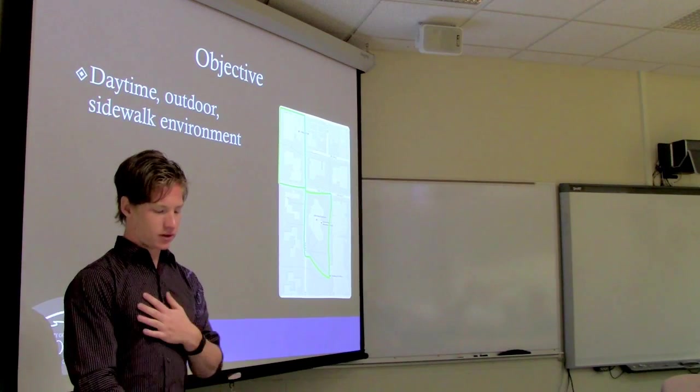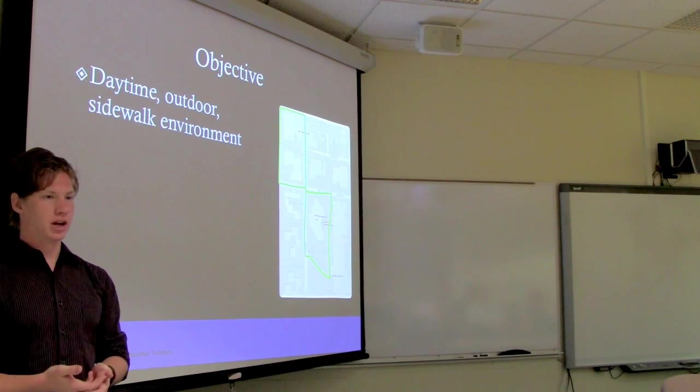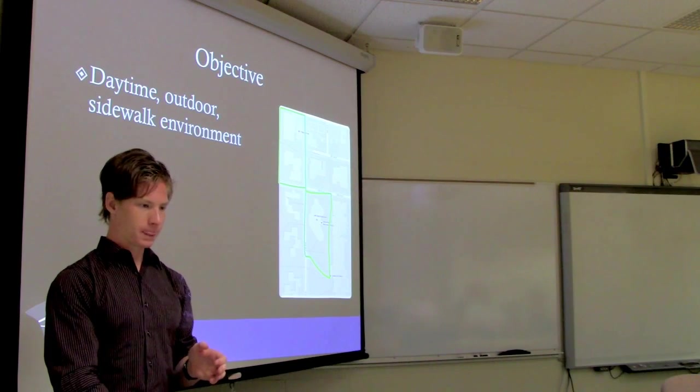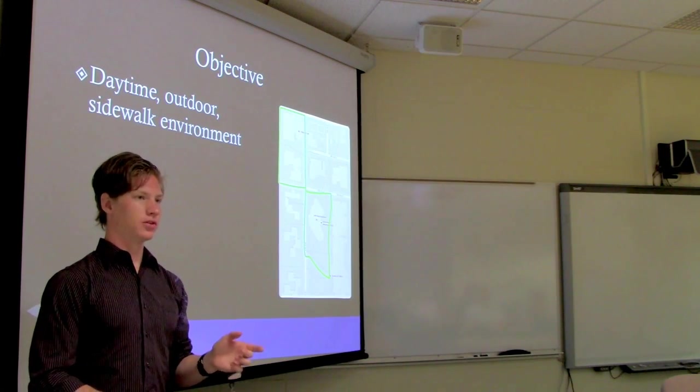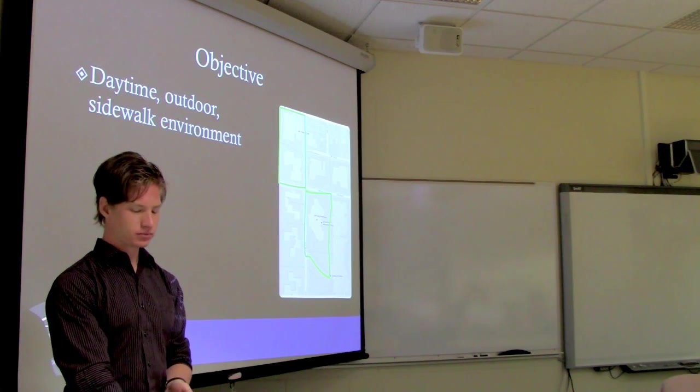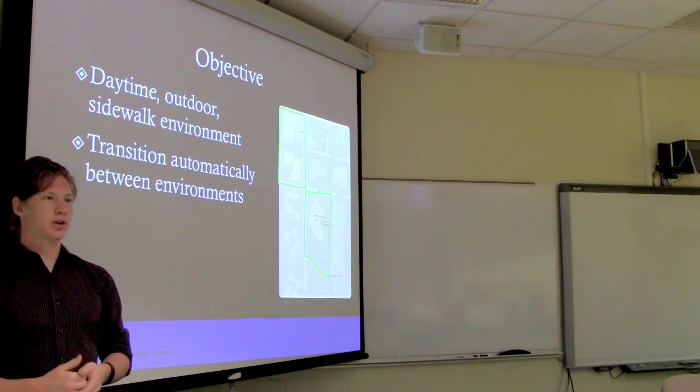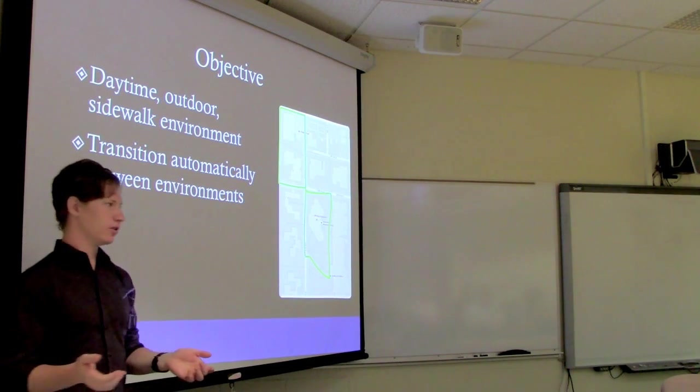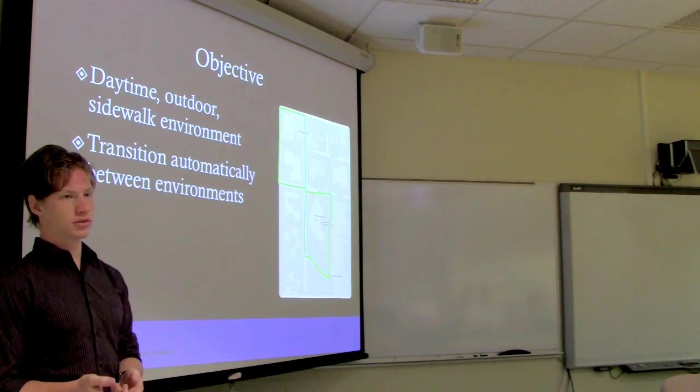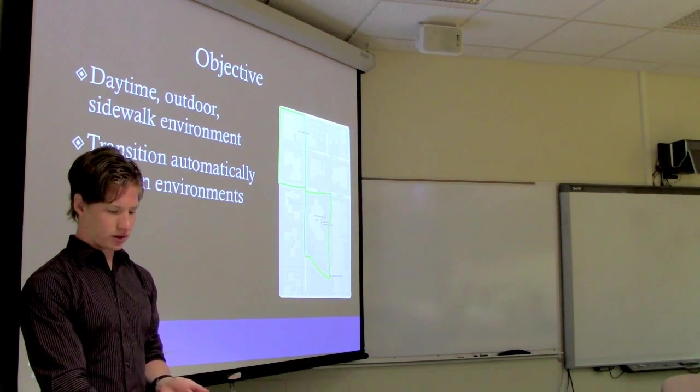And it would need to take in all that information and know that it's still sidewalk and it's still navigable. And I'd like to test during a daytime outdoor sidewalk environment. So it's not robust in that it won't work at night because the camera needs to see. And I want it to be tailored towards kind of an urban or suburban environment where there are sidewalks, there are designated places to move. And like I said, I want it to transition automatically between environments. So whether you're driving on a sidewalk in the middle of a field or on a sidewalk next to a street or on a crosswalk, I want it to automatically recognize that and continue to move.